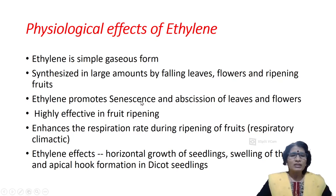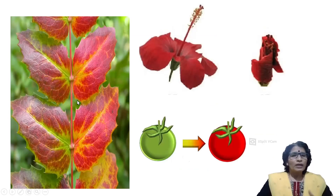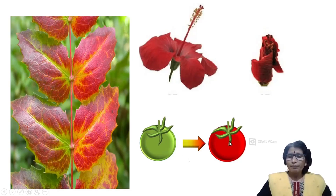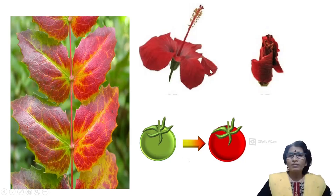Ethylene promotes senescence. Senescence means the last stage before dying. After senescence, abscission of leaves and flowers takes place. After a particular time, leaves become faded and flowers also become faded, then fall from the plant. Fruits also become ripened and detach from the plant body. The falling of leaves, flowers and fruits is known as abscission, and this is promoted by both ethylene and abscisic acid.